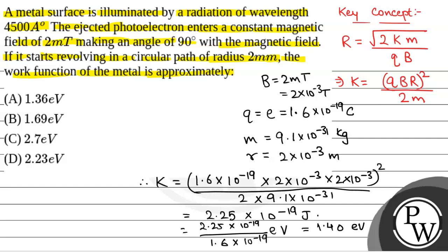This is the maximum kinetic energy. We have been given the wavelength of radiation as 4,500 angstrom. Therefore, the energy of radiation in electron volts will be 12,400 divided by 4,500, which equals 2.76 electron volt. This is the energy of radiation.